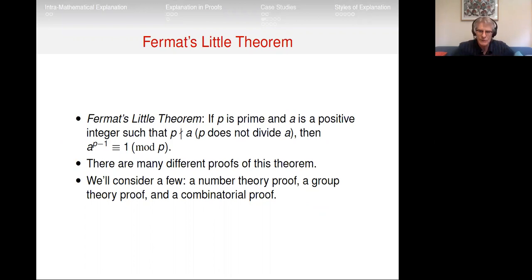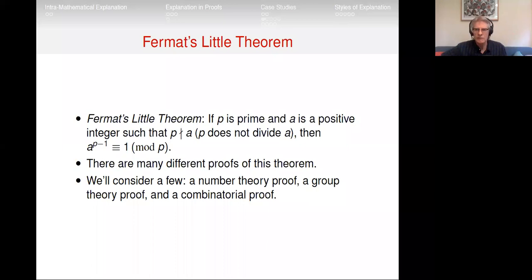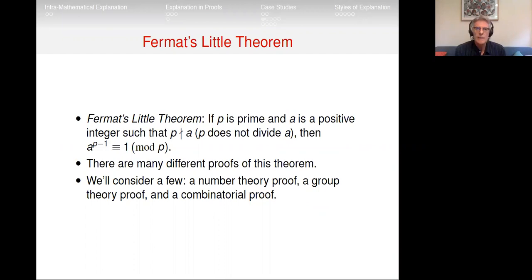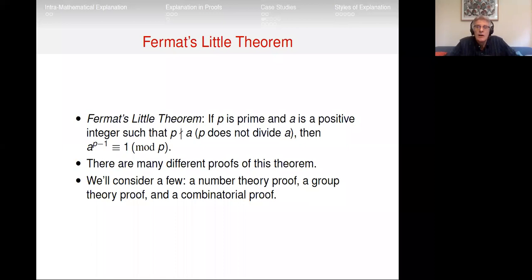Philosophers of mathematics who first started into this chose examples they felt really familiar with — high school, undergraduate mathematics courses — which is understandable but still a mistake. We want an account of what's going on in mathematics generally. We want the intuitions of mathematicians about which proofs are explanatory, and from a variety of areas in mathematics, not just Euclidean geometry and simple examples philosophers feel comfortable with.